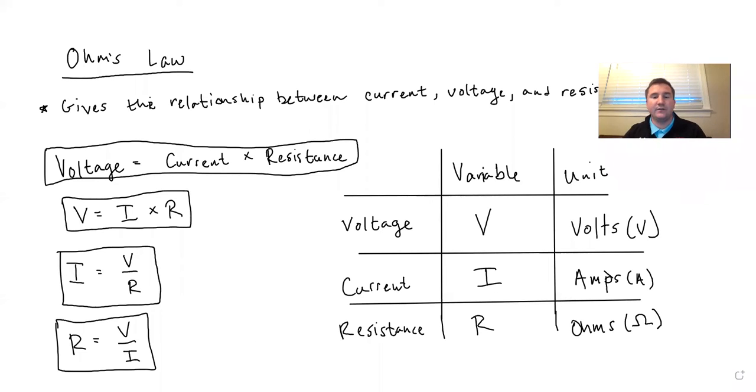And R equals V over I. And we have this little table here that might help us out if we ever get confused on what the variables or the units are for those three big things: voltage, current, and resistance.